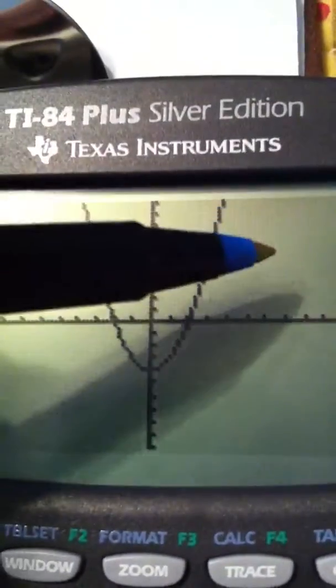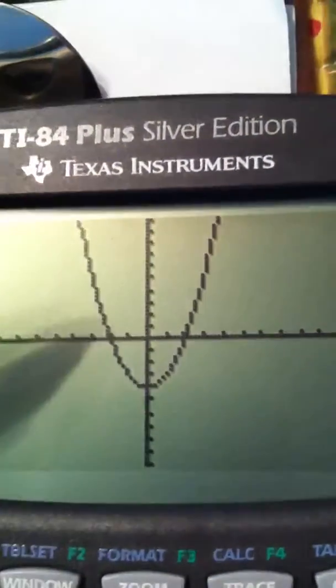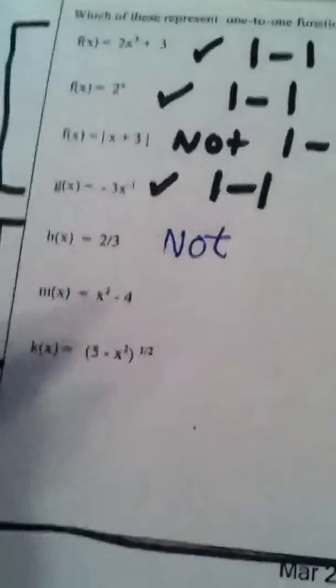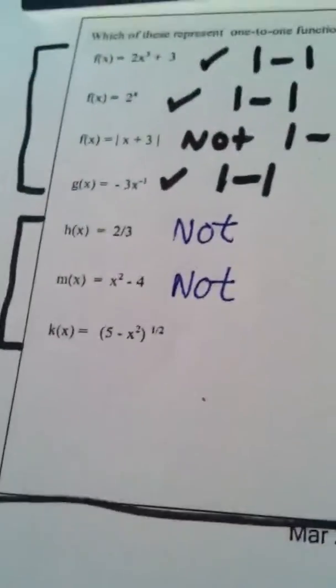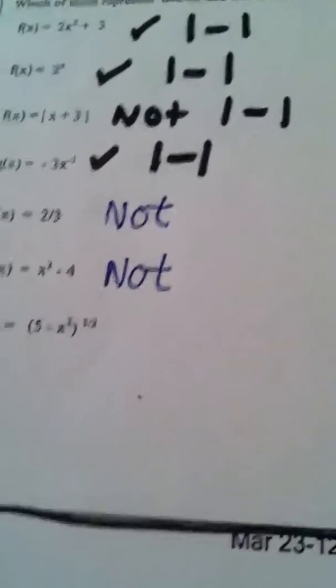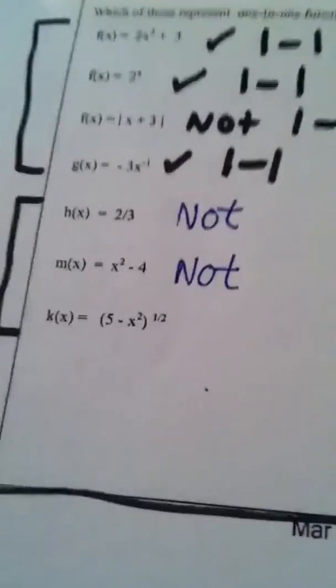No, because when we draw a horizontal line, it crosses the graph twice, which means we have repeated y values. Therefore this is not a one-to-one function, which means even though it has an inverse, its inverse is not a function, so we're not interested in it.